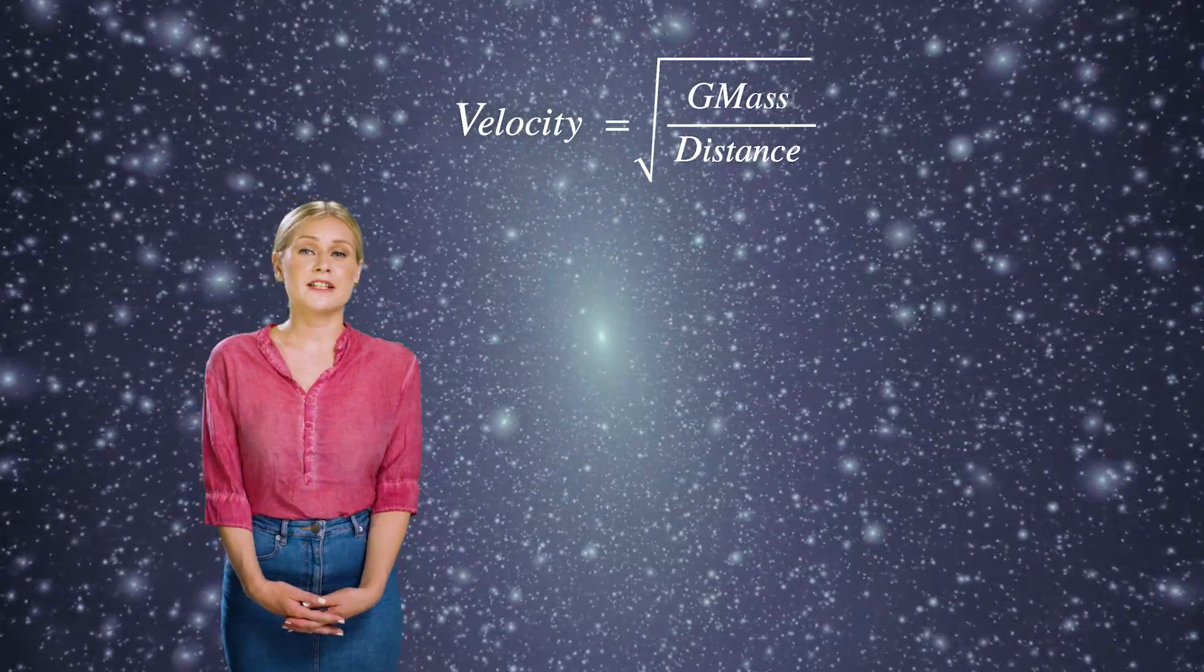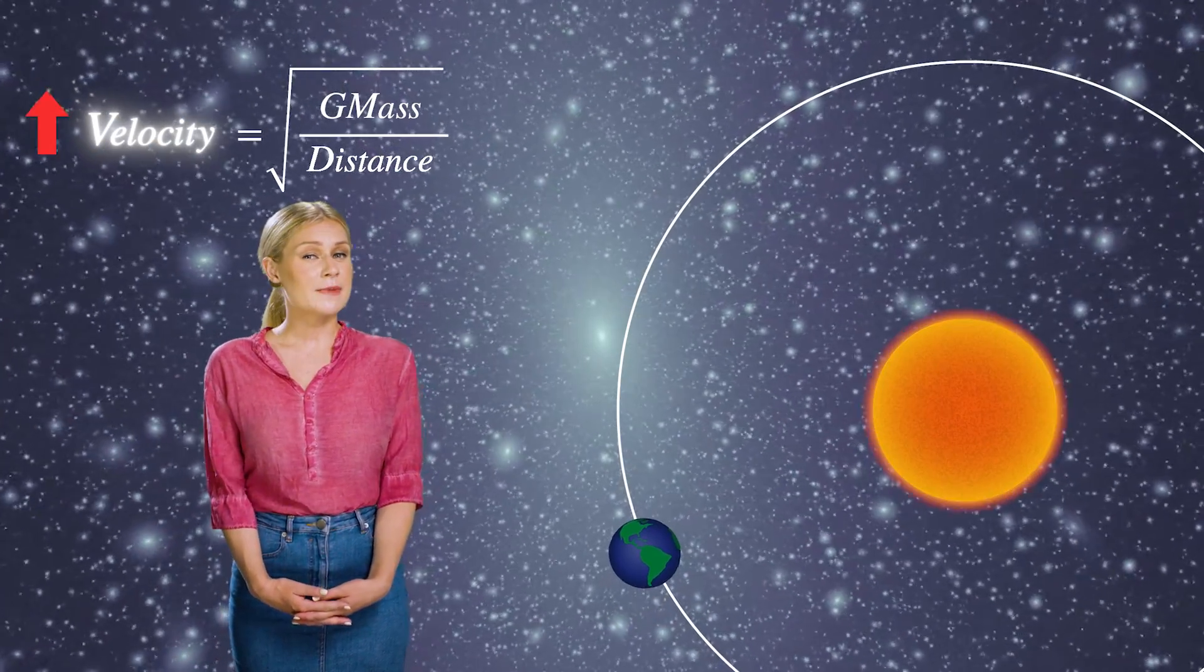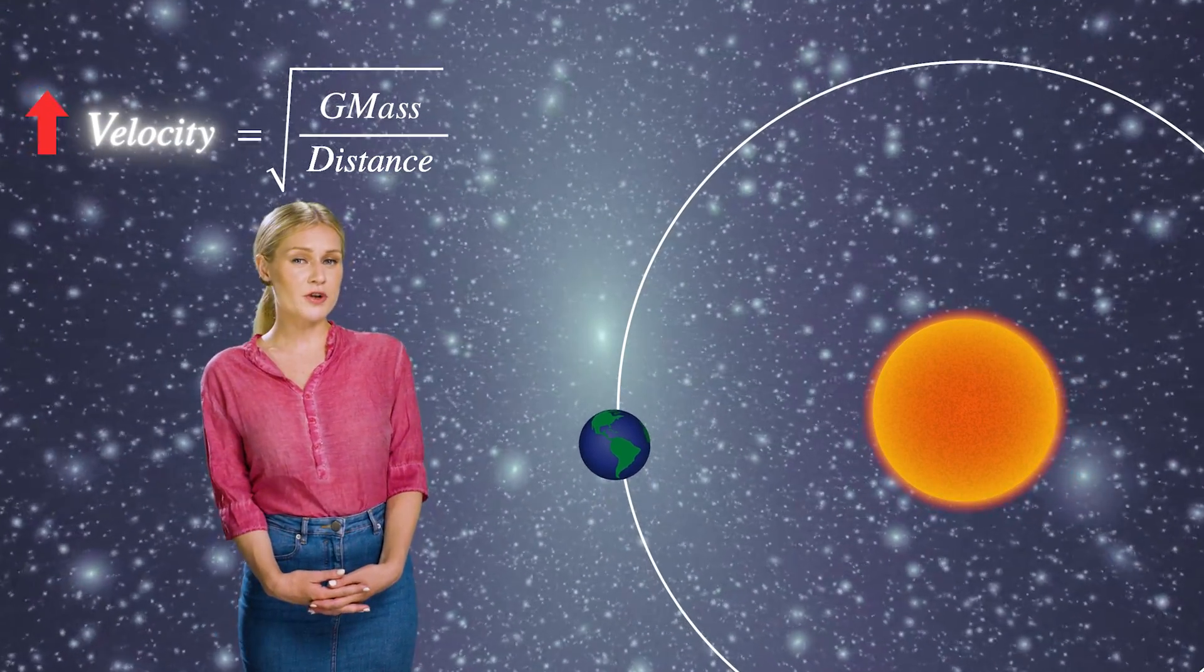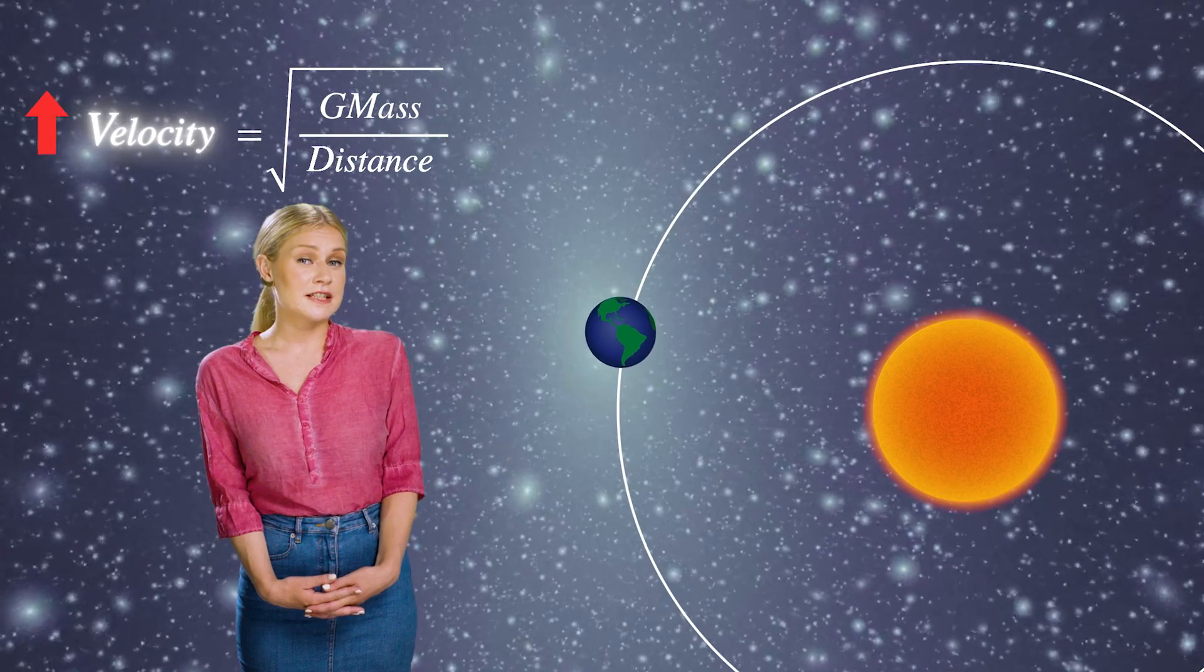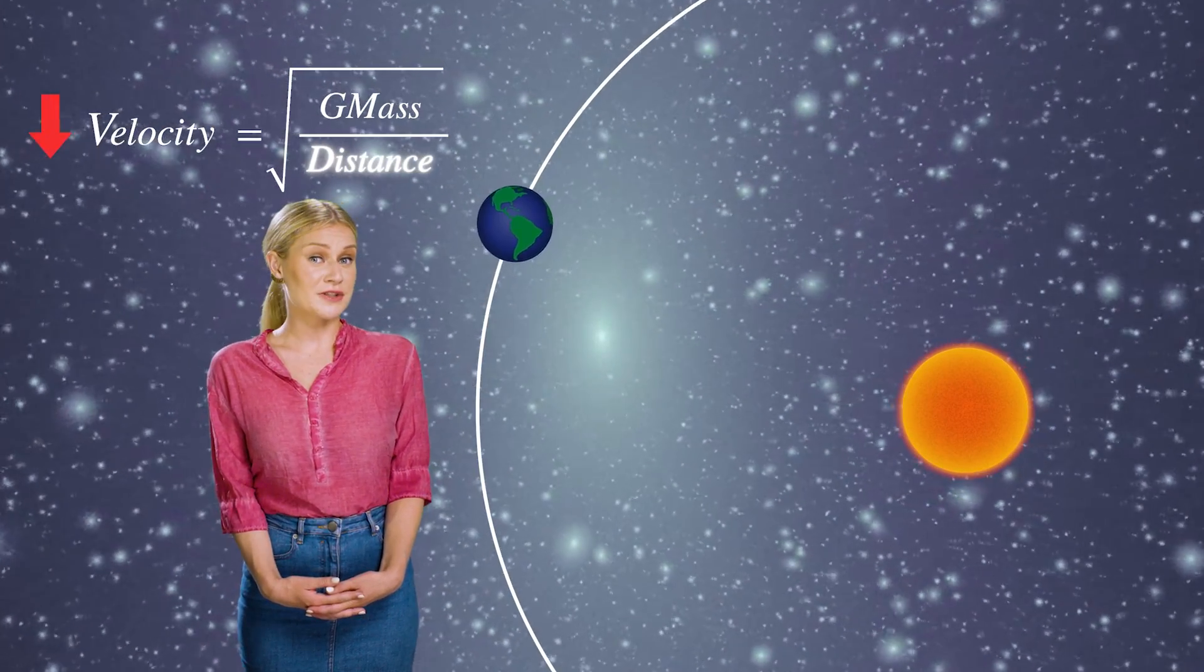From Newton's law of gravity, we know that the rotational velocity of an object increases depending on the amount of mass within its orbit, and the rotational velocity slows down as the radius of its orbit gets bigger, as shown in this equation.